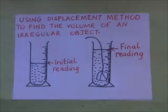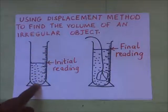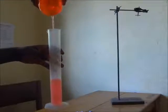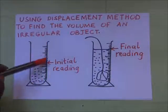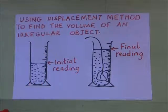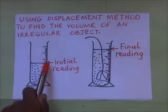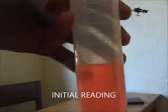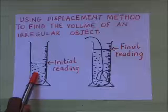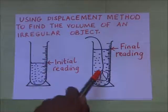In the displacement method of finding the volume of an irregular object, we simply put water in a calibrated measuring cylinder. The measuring cylinder must be marked and calibrated. When you fill in the water, you first take note of the initial reading — let's say the initial reading is 20 centimeters cubed. Then you get a string, tie your stone or irregular object, and immerse it into the water.